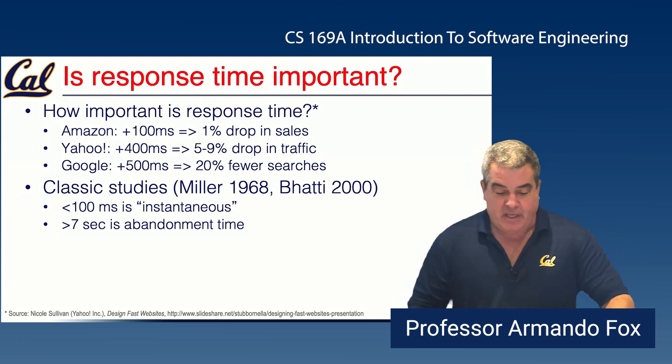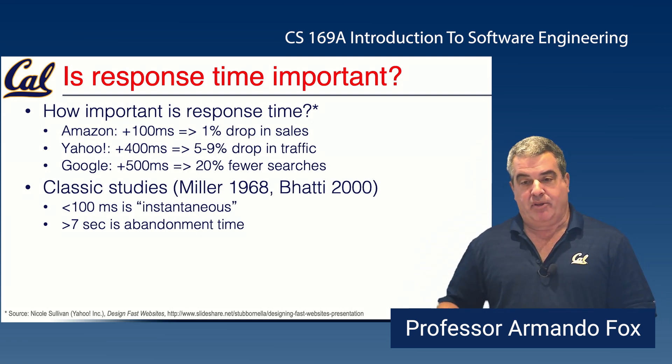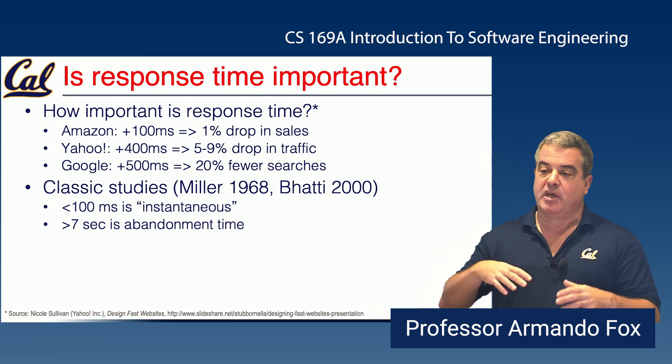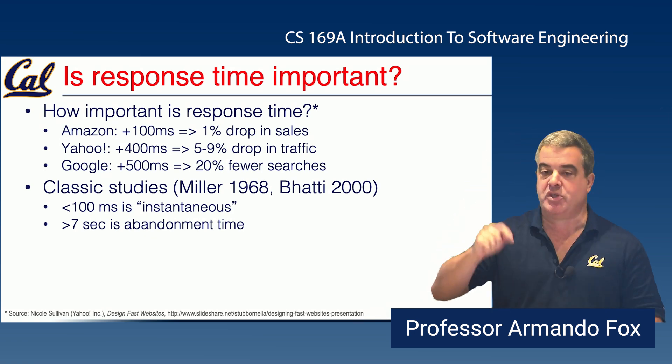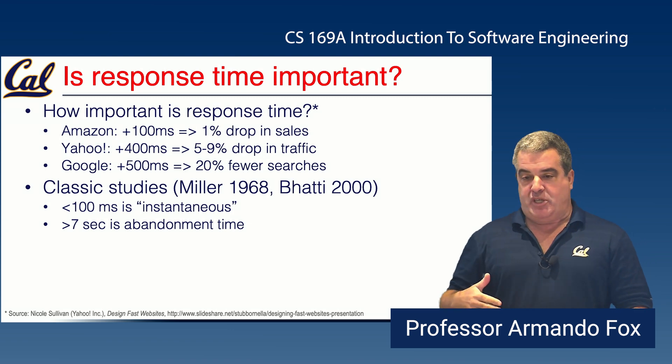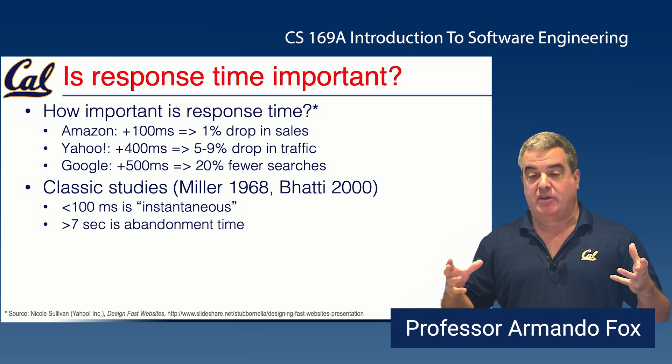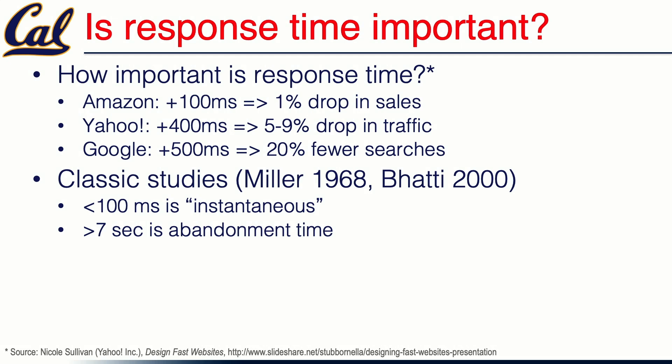There are also two studies done more than 30 years apart that reached very similar conclusions. The question is: if you're using a visual interface and you do something, what is the user's perception of how long the system takes to respond so they know their action had an effect? One of the interesting thresholds is that if the response is visible in less than 100 milliseconds, that's perceived as instantaneous. Users can't distinguish anything faster than that, so there's no point optimizing further — users will not perceive that it's better.